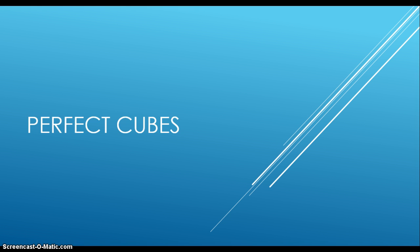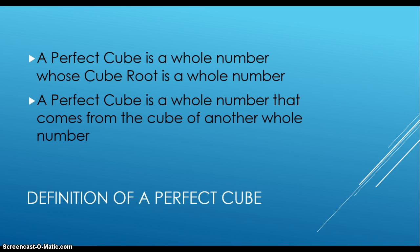Now we're going to look at perfect cubes. The definition of a perfect cube is a whole number whose cube root is a whole number, or a whole number that comes from the cube of another whole number.